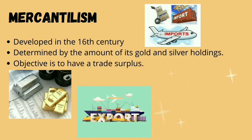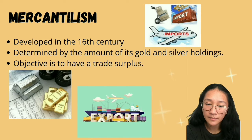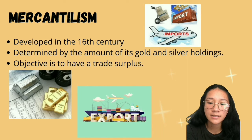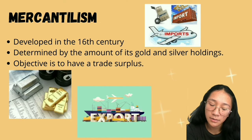Mercantilism held that a country should increase its holdings of gold and silver by promoting exports and discouraging imports. If people in other countries buy more from you — exports — than they sell to you — imports — then they have to pay you the difference in gold and silver. The objective of each country was to have a trade surplus, where the value of exports is greater than the value of imports, and to avoid a trade deficit, where imports exceed exports.